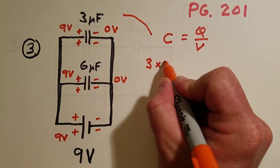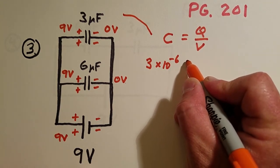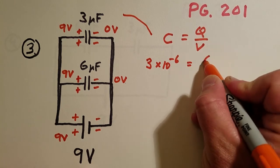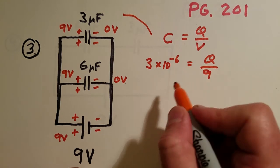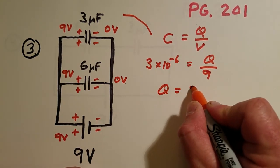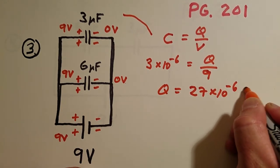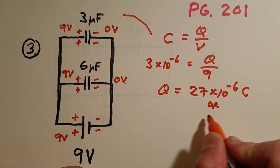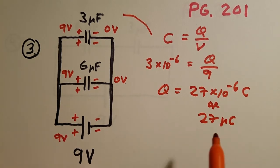On that capacitor, you have three times ten to minus six farads—that's what the micro means—equals the charge, which we don't know yet, over the nine volts that are across that. If you just multiply the nine over, you'll get the charge on that capacitor as nine times three, or twenty seven times ten to minus six coulombs, or you could say twenty seven micro coulombs.